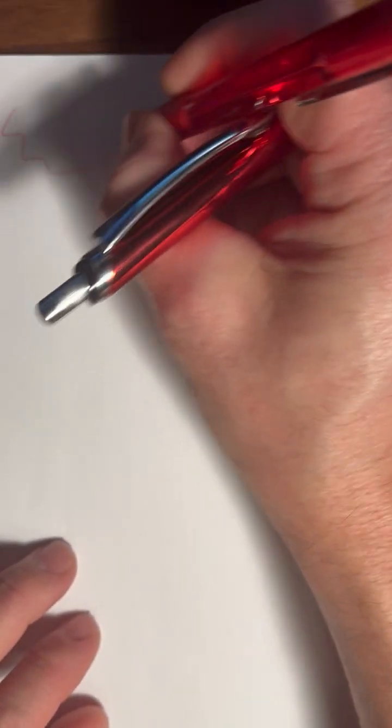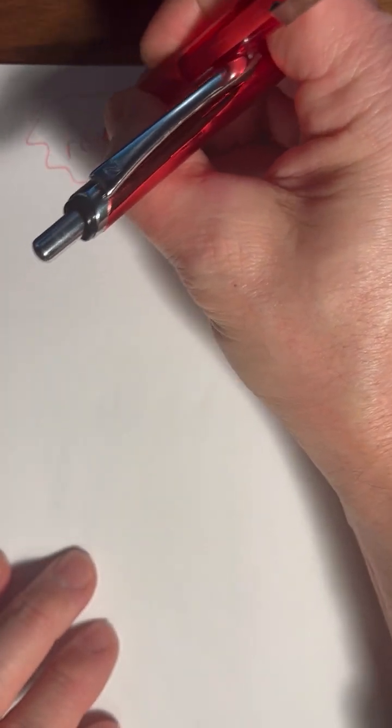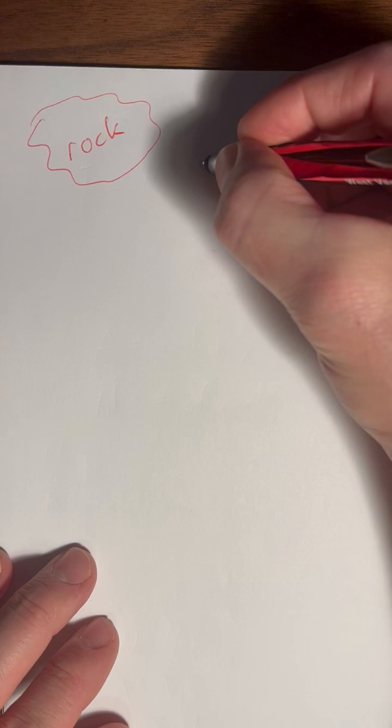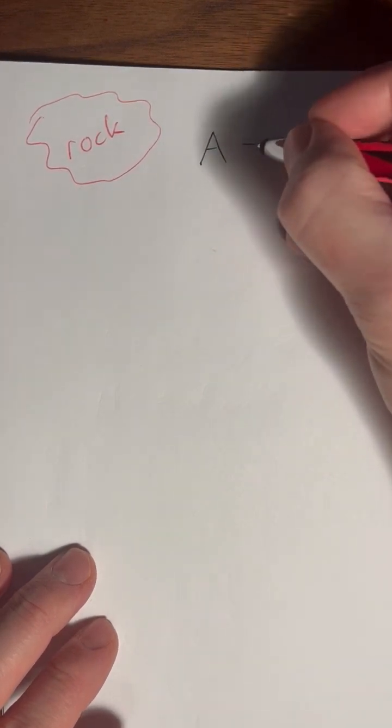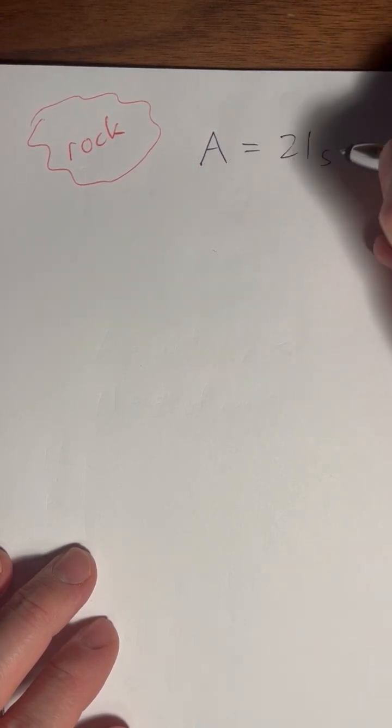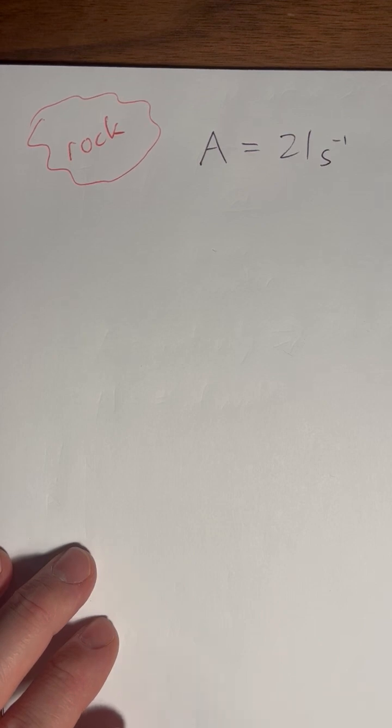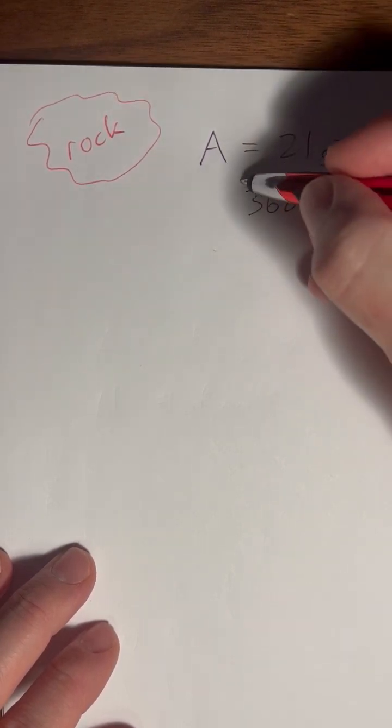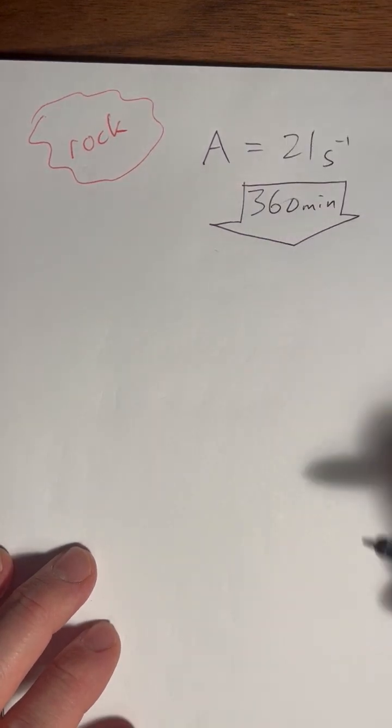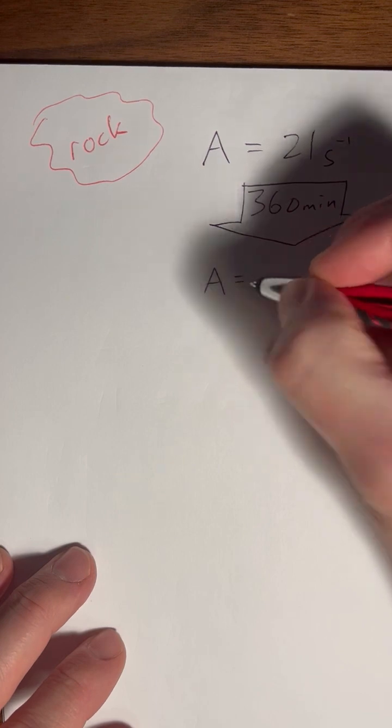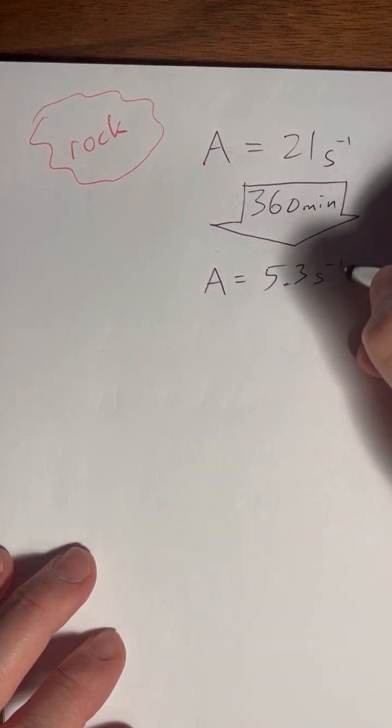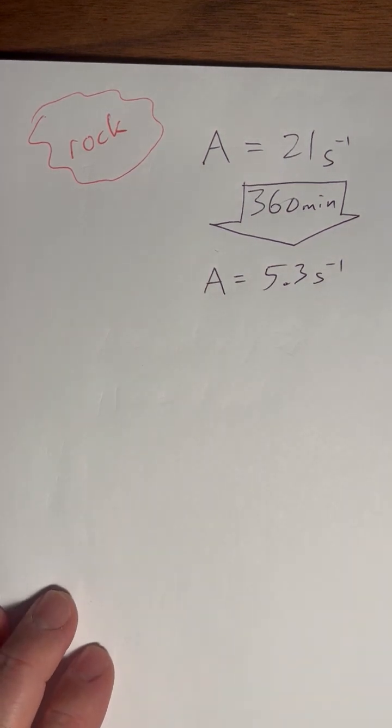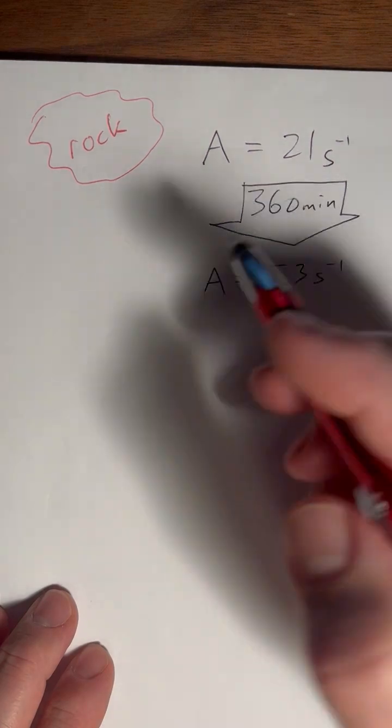So let's do a little problem. Let's say you have some rock here. We don't know what it is. And you take your activity. And your A at some point in time is 21 decays per second. I'll say that's s to the negative one. Okay. And then some time goes by. Let's say 360 minutes go by. And you check your activity again. And now your activity is only 5.3. You kind of average it over a few seconds. And so now you're only 5.3 decays per second. Because you have less nuclei to decay, and so you get less decays per second. And the question is, what's the half-life of this material?